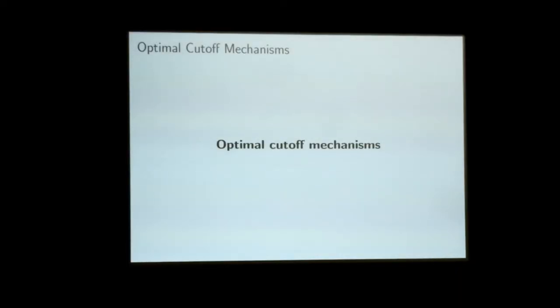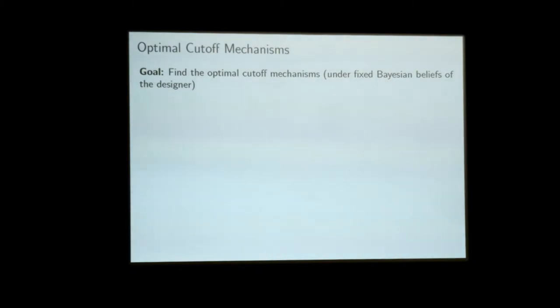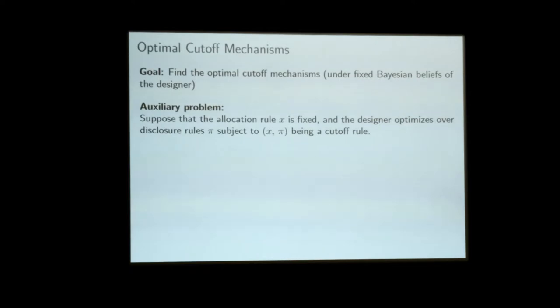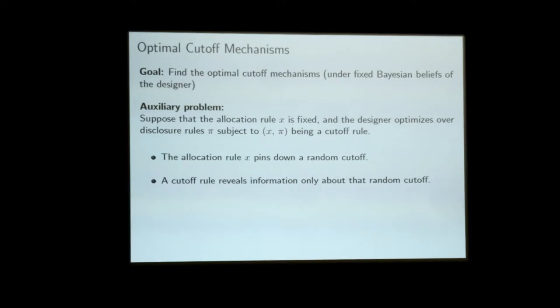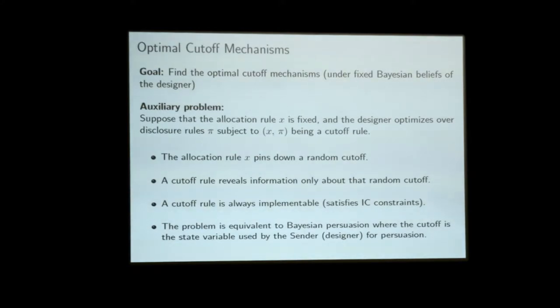Now I want to shift gears and talk about optimality — optimality in a standard economic sense with respect to some fixed Bayesian belief of the designer. We'll first think about an auxiliary problem: fixing the allocation rule and only optimizing over the disclosure rule. This is like saying I'm running a second price auction, but I get to choose how much information to reveal about the second highest bid. Once I fix the allocation, I also fix the cutoff. As long as I only disclose information about that cutoff — potentially noisy, but about the cutoff — the IC constraints are satisfied. All that remains is the information design problem: how much information to disclose. The designer is a sender who has access to information about the cutoff and discloses it to the third party. So it's a persuasion problem, and we know how to solve this.